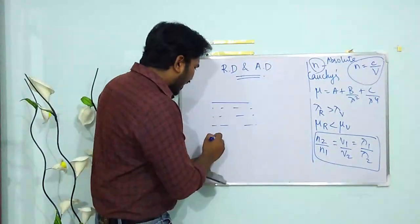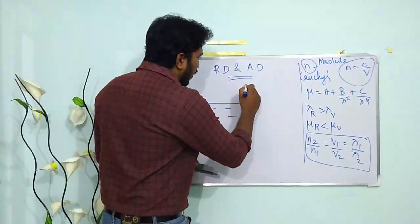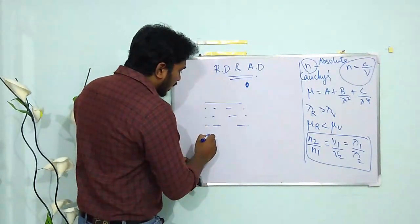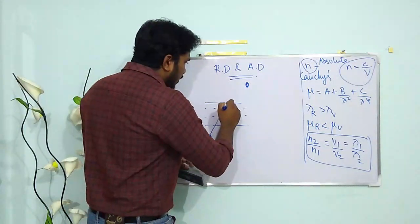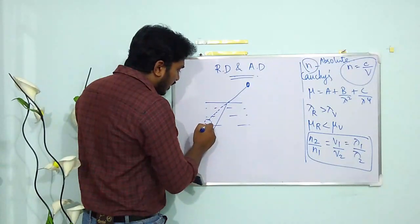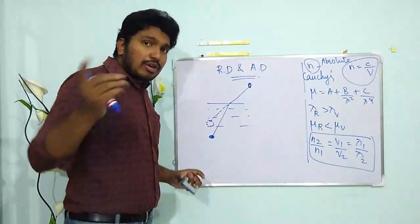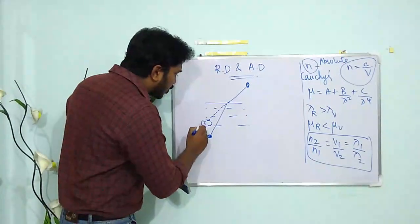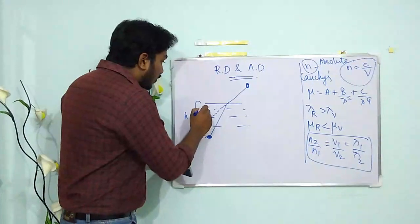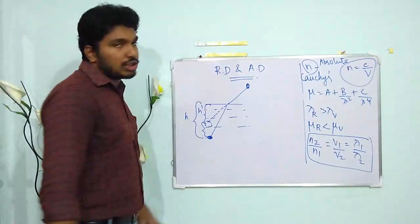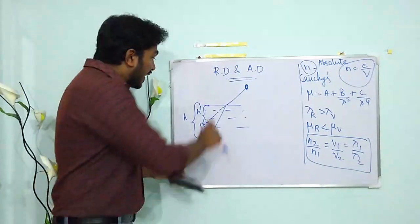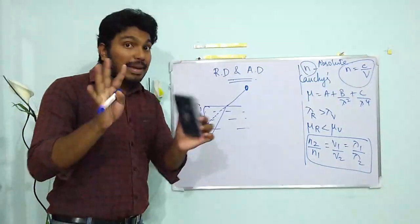When a person looks from above, the light from the coin bends at the surface. The observer actually perceives the object at a different position — there is a shift. Suppose the object was originally at depth h, but the observer feels it is at height h′.